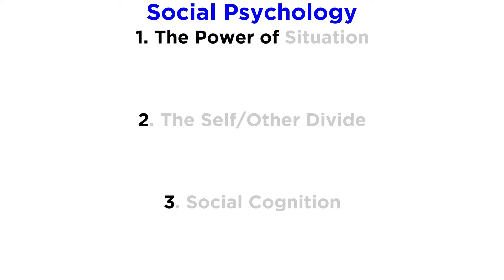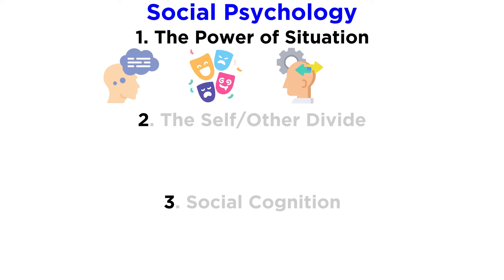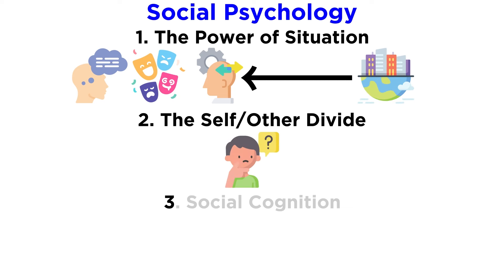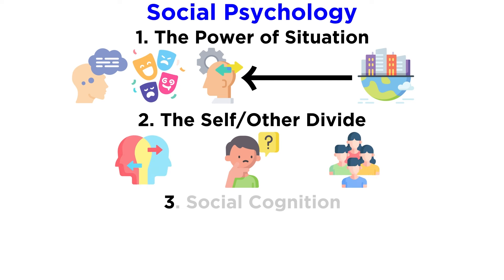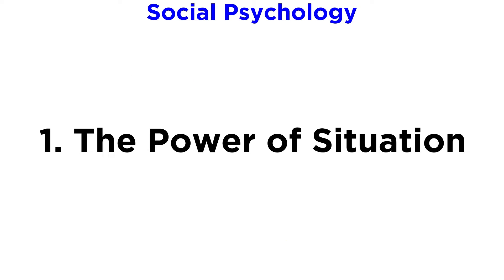First, the power of situation — this is how our thoughts, feelings, and behaviors are shaped by our immediate environment. Then the self-other divide, or how our perception of other people is fundamentally different than our perception of ourselves. And finally, social cognition, or how we think and interact with each other. So let's jump into our first topic in social psychology: the power of situation.